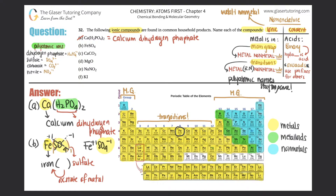To get from minus one to minus two, multiply by two. You have to do the same for the cation: iron times two gives plus two. So iron has a charge of +2, and the Roman numeral is II. Compound B is iron(II) sulfate.